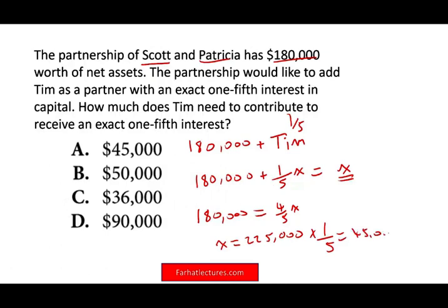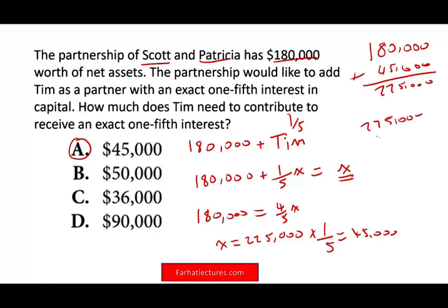Let's reconcile: Scott and Patricia started at $180,000, Tim contributes $45,000, totaling $225,000. Double-checking: $225,000 times one-fifth — which is 20% — gives us $45,000. You can always double-check yourself to make sure it's correct.